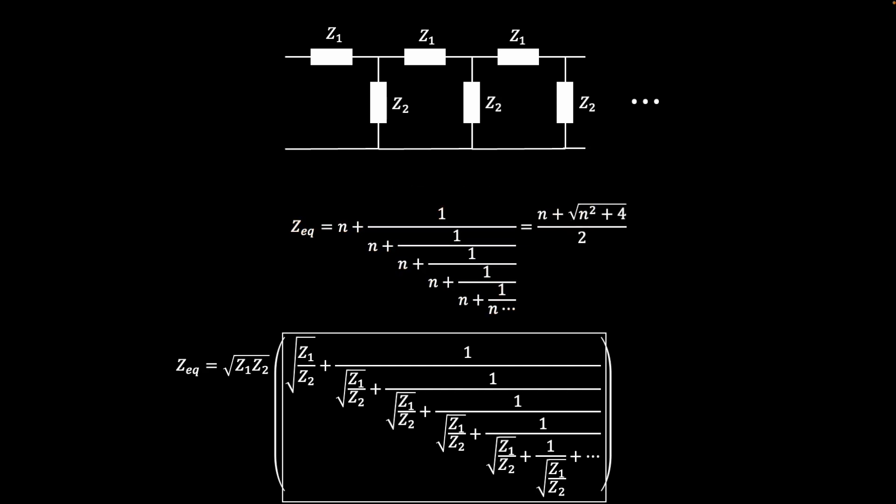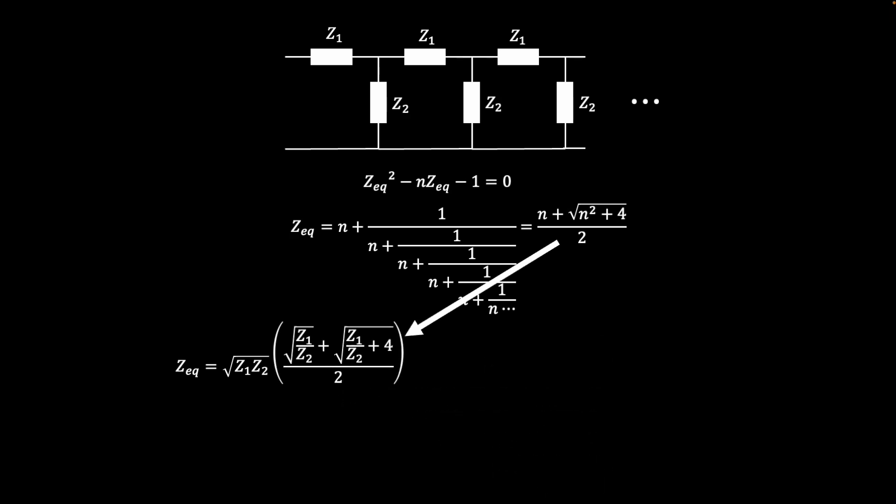In general, if each term in the fraction is n, then the entire fraction is equal to n plus the square root of n squared plus 4 all over 2. This is the result of the quadratic formula derived in the last scene. Plugging this relationship back into the example at hand allows the continued fraction to be collapsed into just a few terms. Then multiplying the terms produces the final form of the solution to this example.